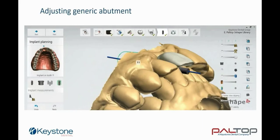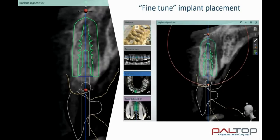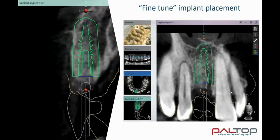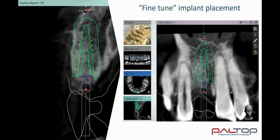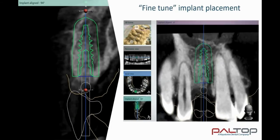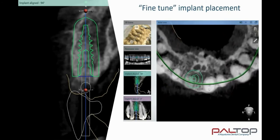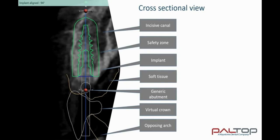Now that we are satisfied with the position of the implant and the abutment, fine-tuning of the implant placement is easily achieved in the cross-sectional view. As we scroll through the sagittal view, we can see the implant in its surrounding safety zone and its proximity to the adjacent roots. In addition, we can scroll through the axial view and see the proximity of the implants and safety zone to the incisive canal. In the cross-sectional view, we are able to see the bone anatomy, the incisive canal, the safety zone surrounding the implant and the implant geometry, the soft tissue, the generic abutment, the virtual crown and the opposing arch.